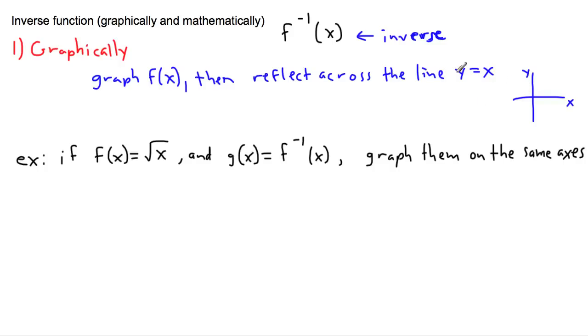All I have to do is reflect it across the line y equals x. If you know your graphs, this is a linear function - a straight line with a y-intercept of zero, passing through the origin, with a slope of one. Every one I go over, I go up one.